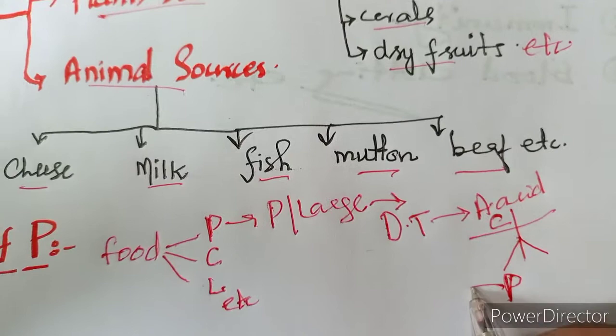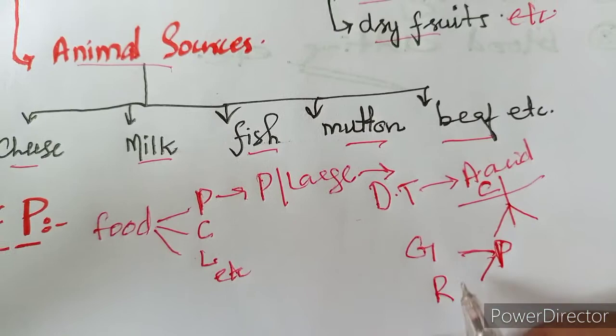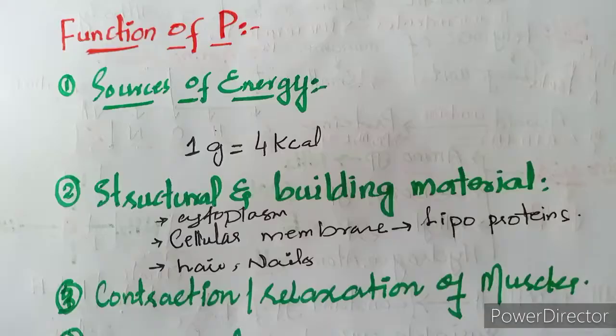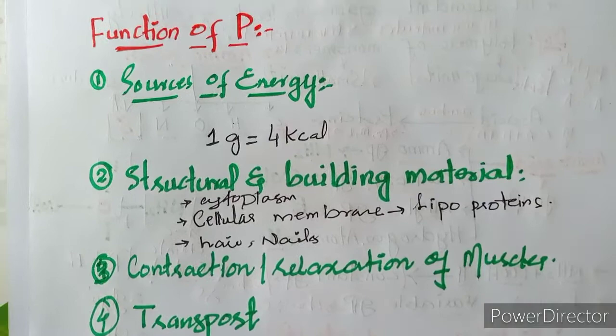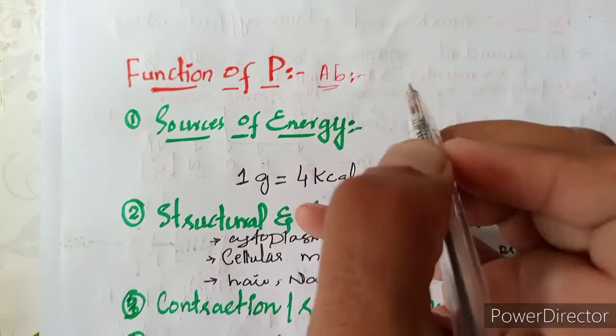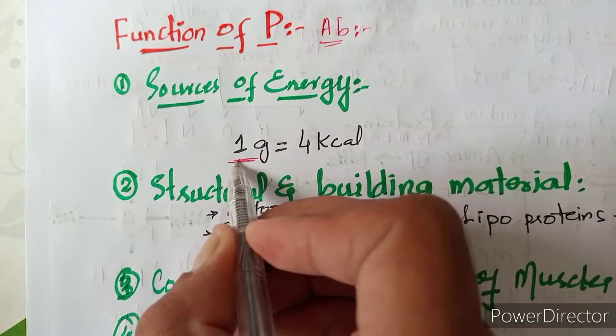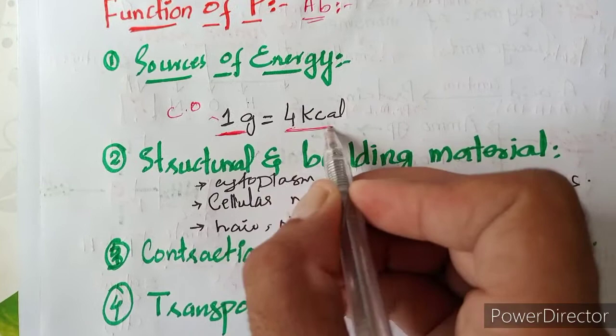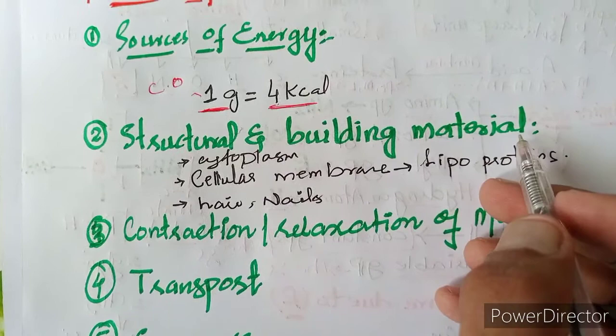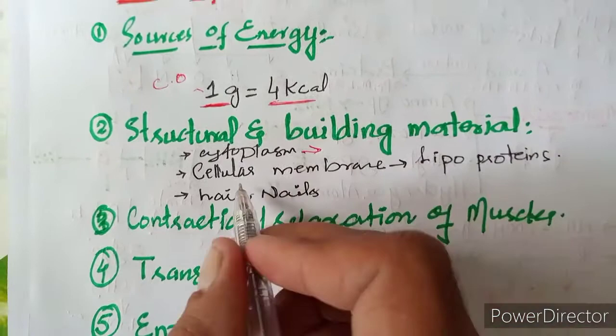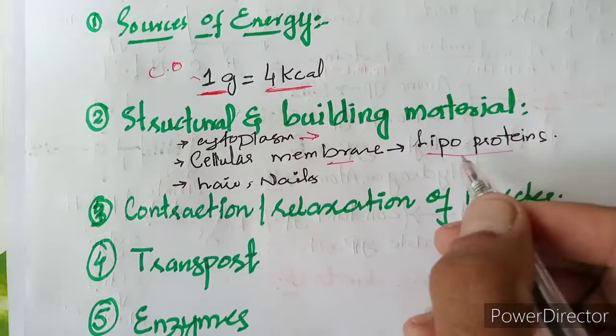The functions of proteins include growth and repair. Proteins are the most abundant organic molecules in the body. Proteins are also a source of energy — if completely oxidized, they provide energy. Proteins form various body structures, including cytoplasm proteins, cell membrane proteins, and structural components.